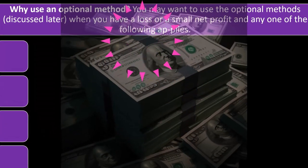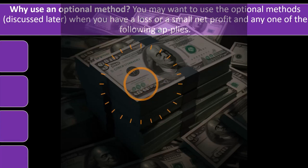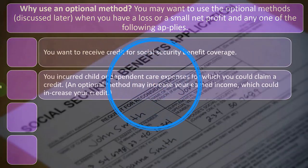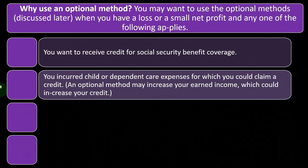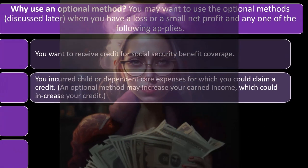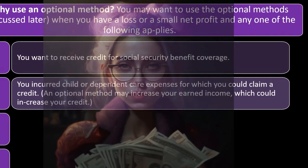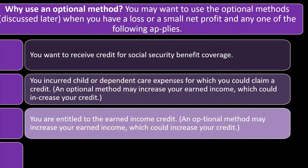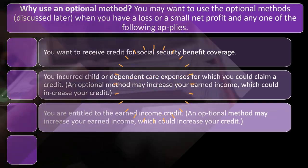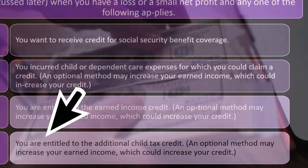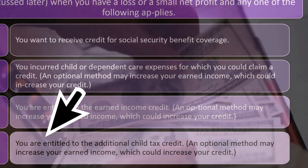You may want to use the optional methods when you have a loss or a small net profit and any one of the following applies: you want to receive credit for Social Security benefit coverage; you incur child or dependent care expenses for which you could claim a credit; or you are entitled to the earned income credit or the additional child tax credit. An optional method may increase your earned income, which could increase those credits — normally more income is bad for taxes, but here it can be beneficial.